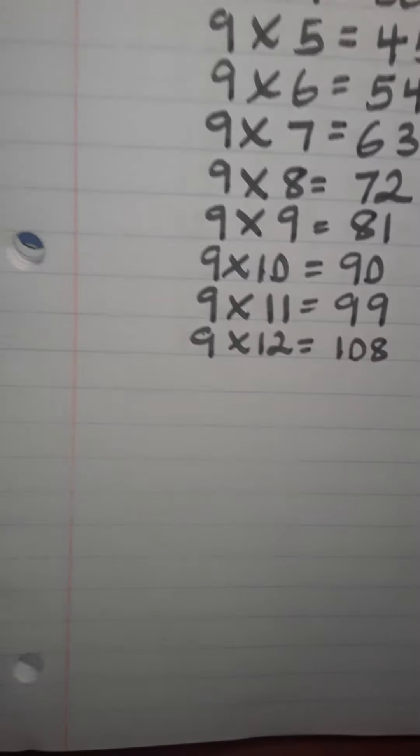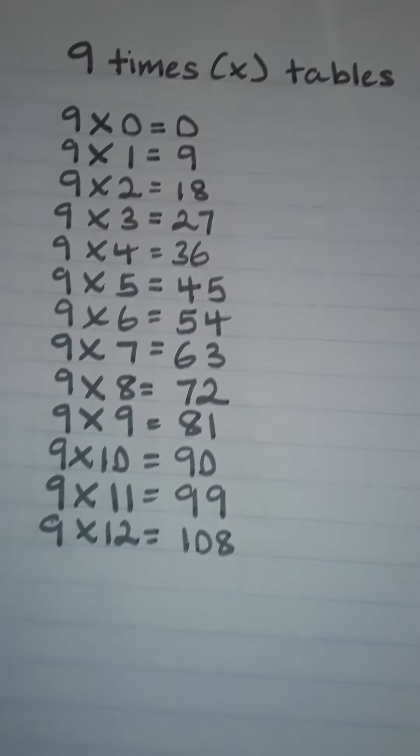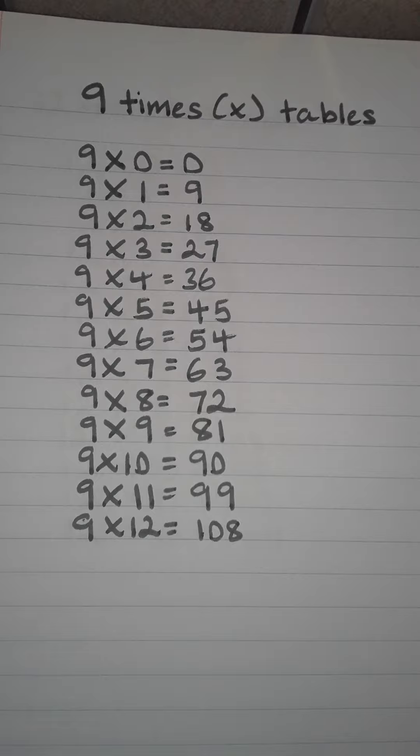9 times 10 is 90. 9 times 11 is 99. And finally, 9 times 12 is 108. This was the 9 times tables, as you can see here.